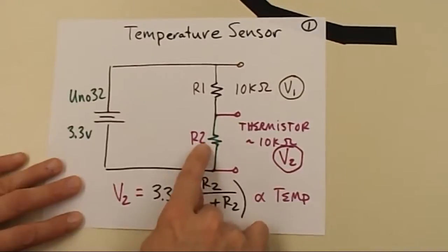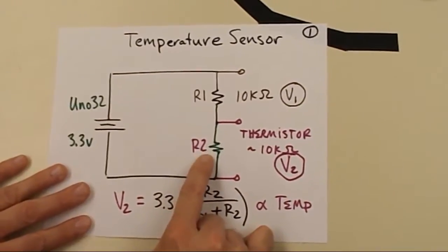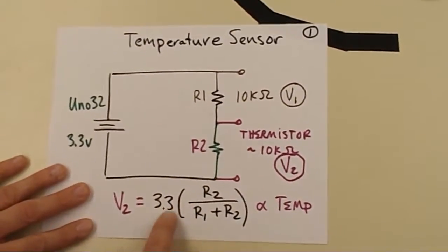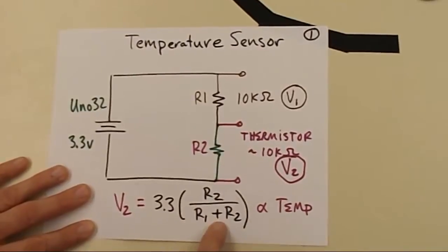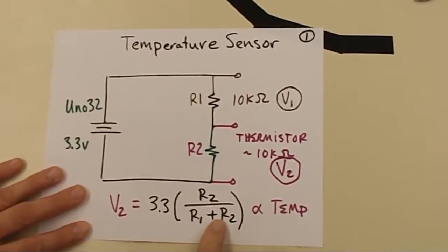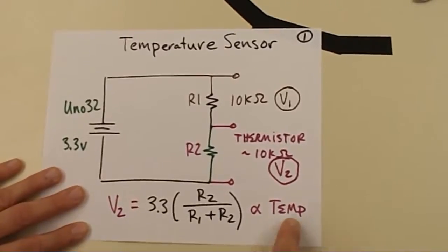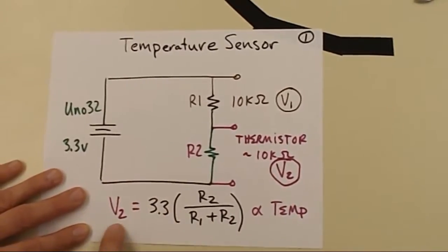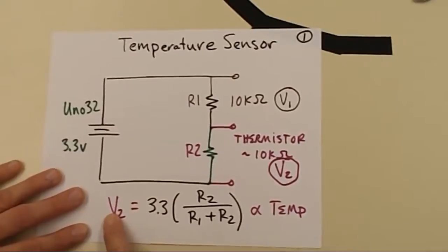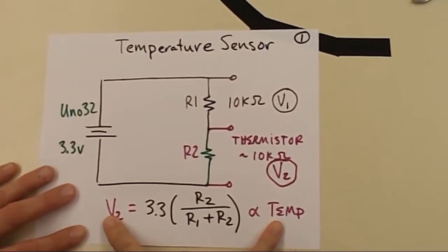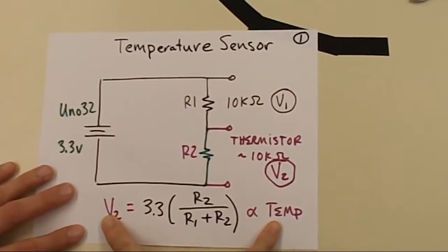So again, the voltage across this thermistor is going to be a function of the voltage that's applied to it times the ratio of the values of the resistors. And so that's going to be proportional to the temperature that we see. And so we're going to be taking data today to compare the voltage on the thermistor to the temperature that we actually place the thermistor in.